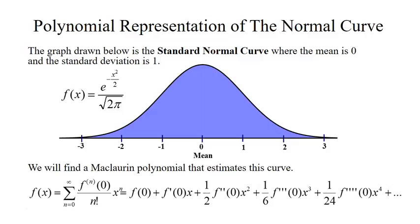If we expand that out, what we will be doing is finding the function evaluated at 0 and adding to that the first derivative evaluated at 0 times x, plus 1 over 2 factorial times the second derivative evaluated at 0 times x squared, plus 1 over 3 factorial times the third derivative evaluated at 0 times x cubed, and so on.